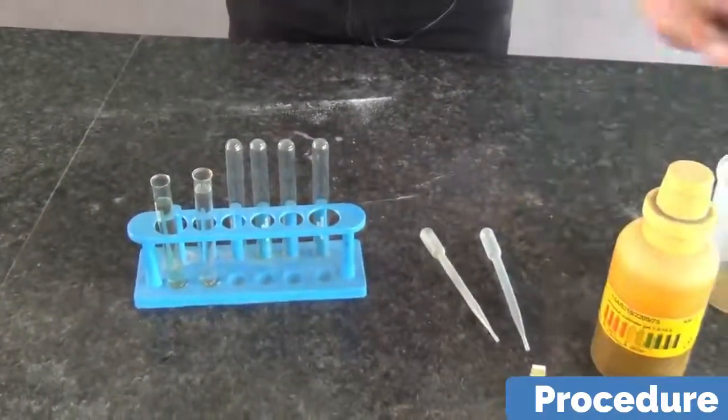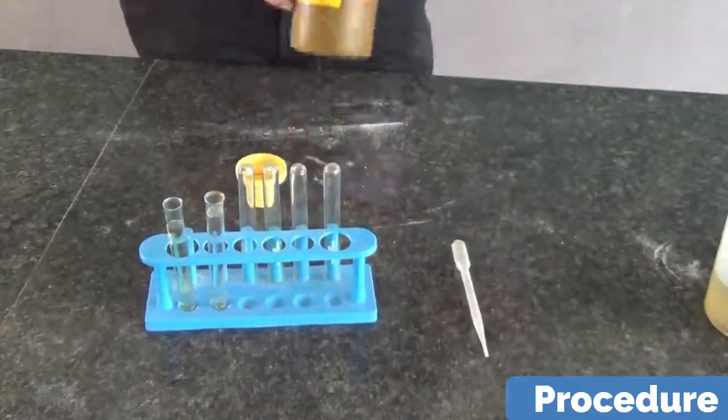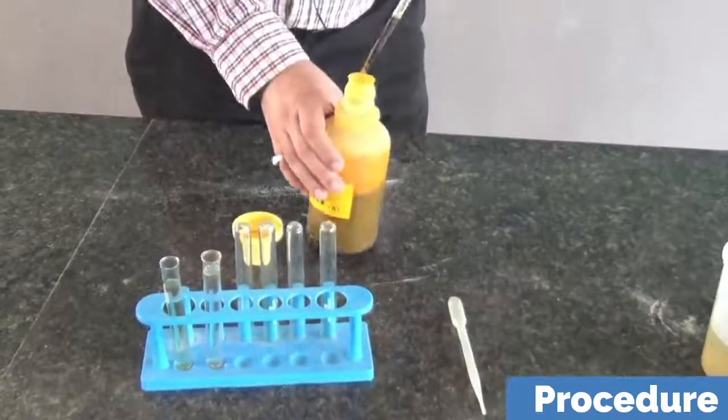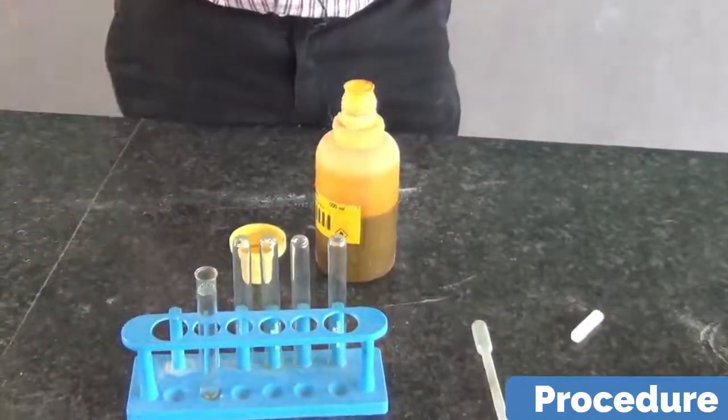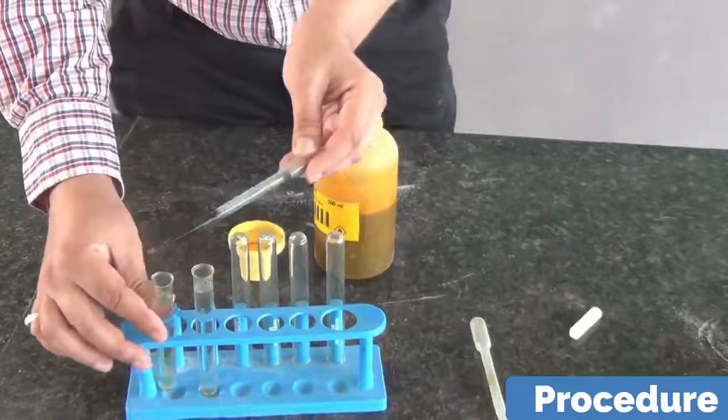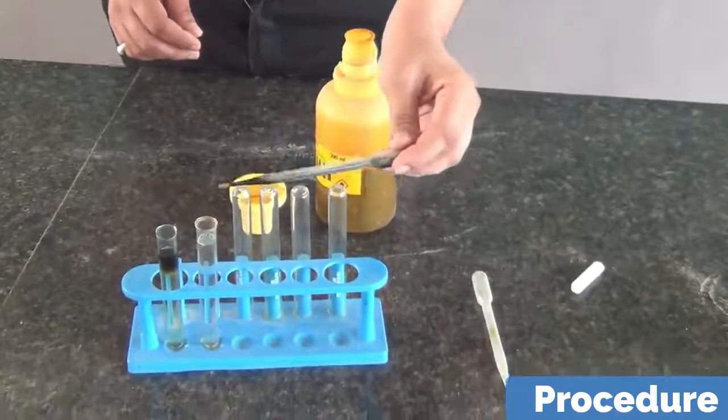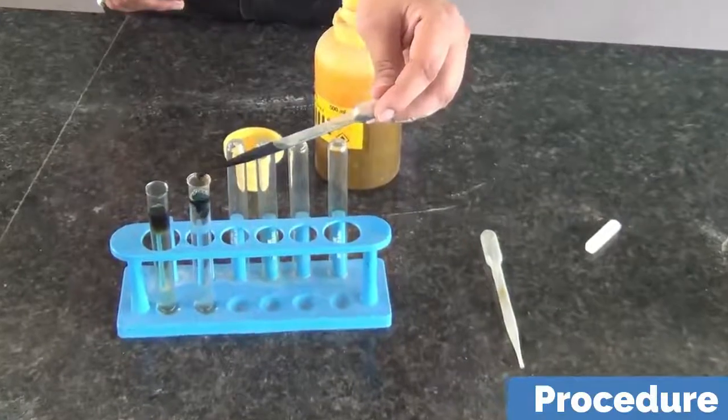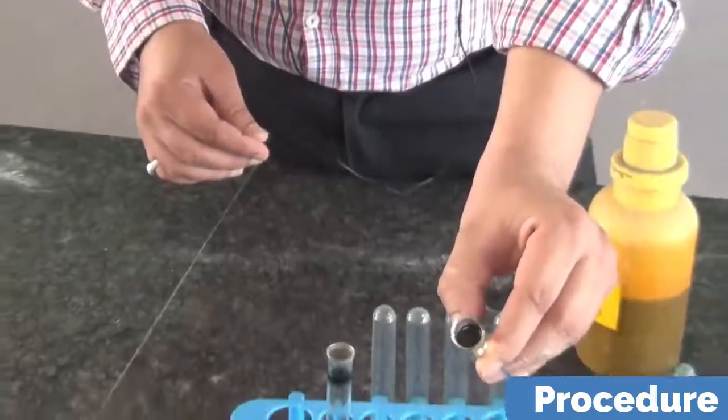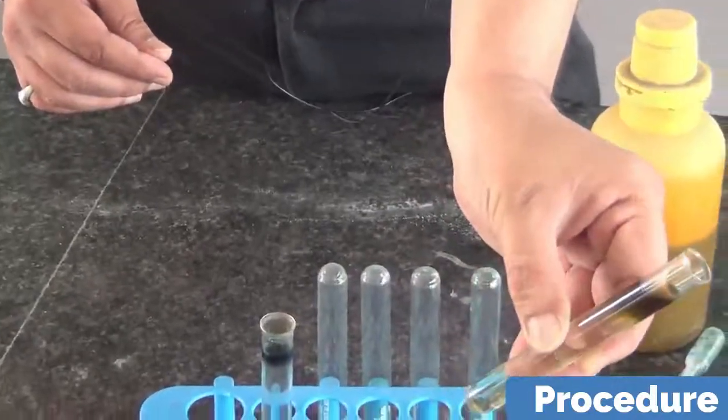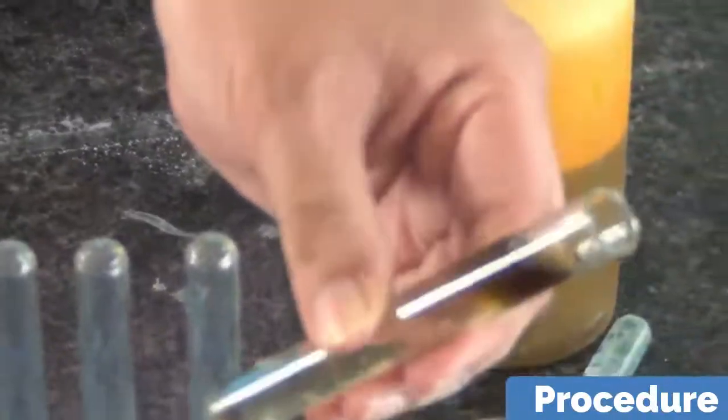Now I am going to add universal indicator solution to both of these and we will be observing the color. Just two or three drops are required. First to sample A, then to sample B. In the first case, just see inside the water in the test tube. Bluish green color at the side. You can see bluish green appearance. It is dark green. So dark green color.